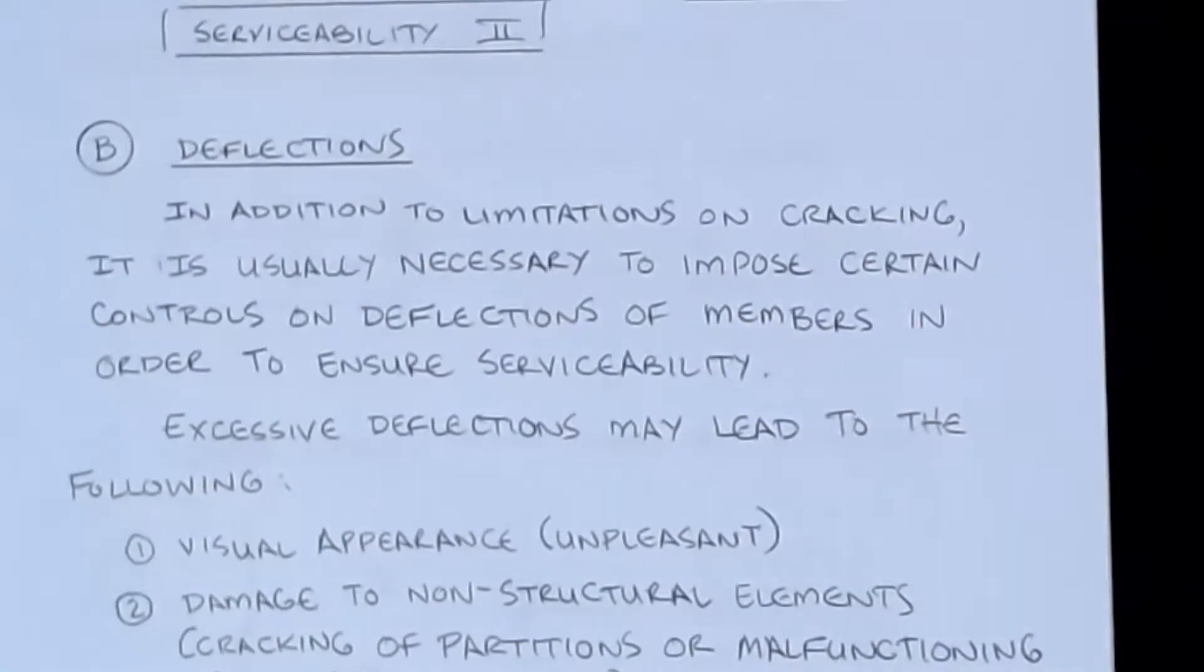In addition to limitations on cracking, it is usually necessary to impose certain controls on deflections of members in order to ensure an adequate serviceability limit, that deflections don't become too large or too pronounced, that they may be perceived as either being physically unsafe as well as causing actual problems in structural behavior. Most often, deflections are limited by some sort of code provision, whether it's a local building code limiting floor beam deflections to L over 360 or roof deflections to L over 240 or whatever the span limit deflection characteristics are. ACI does things a little bit differently, and we're going to talk about that.